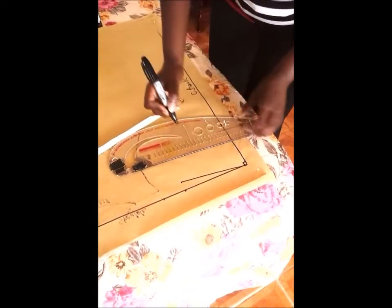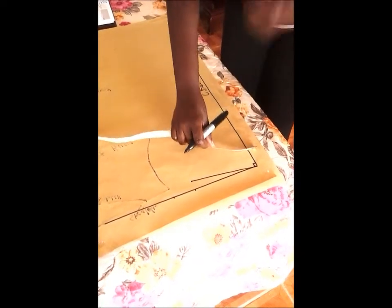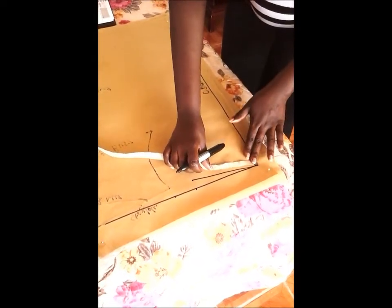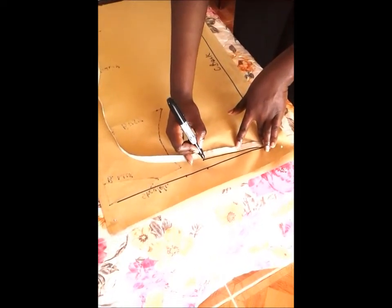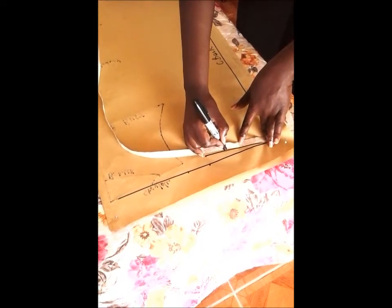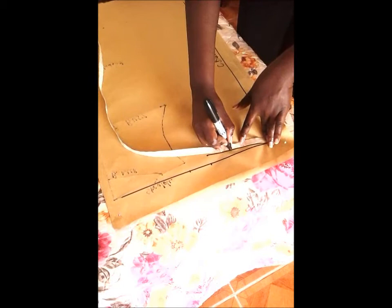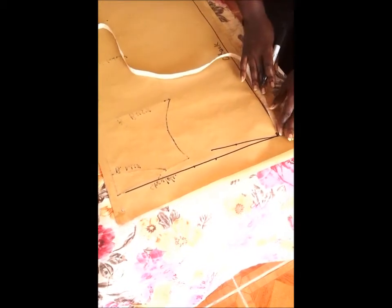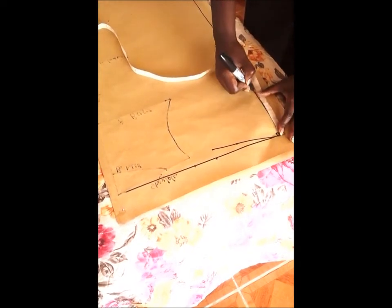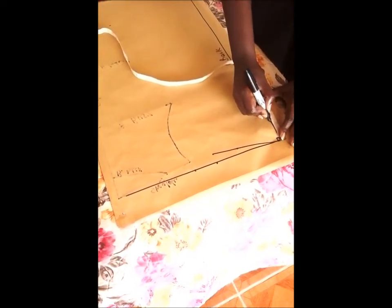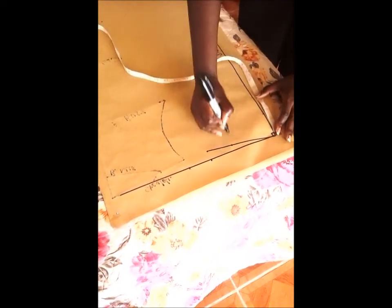So the first thing we're going to measure is the shoulder and her shoulder is 14 inches, so half of that would be 7, so I can mark 7 right here. But given the fact that we know that nobody's shoulder is straight across, we can go down to about an inch and mark the shoulder there.